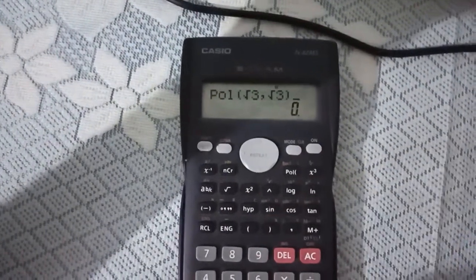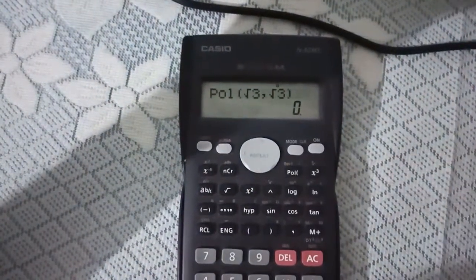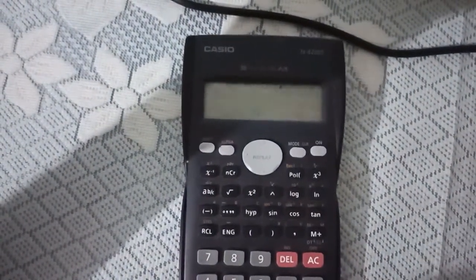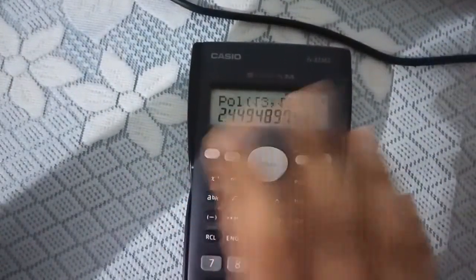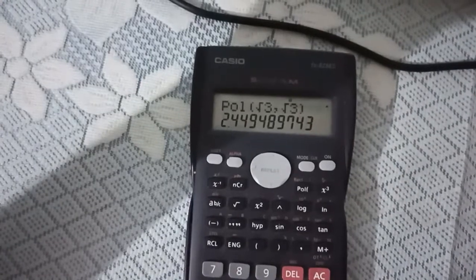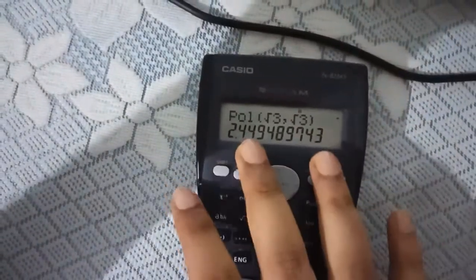Suppose I am taking random value and if I press equal to, then it will give me the value of R. That is 2.449. That is very close to 2.5. You all know. You have all done this root 3 root 3 problem in your copy. And that is very close to 2.5.